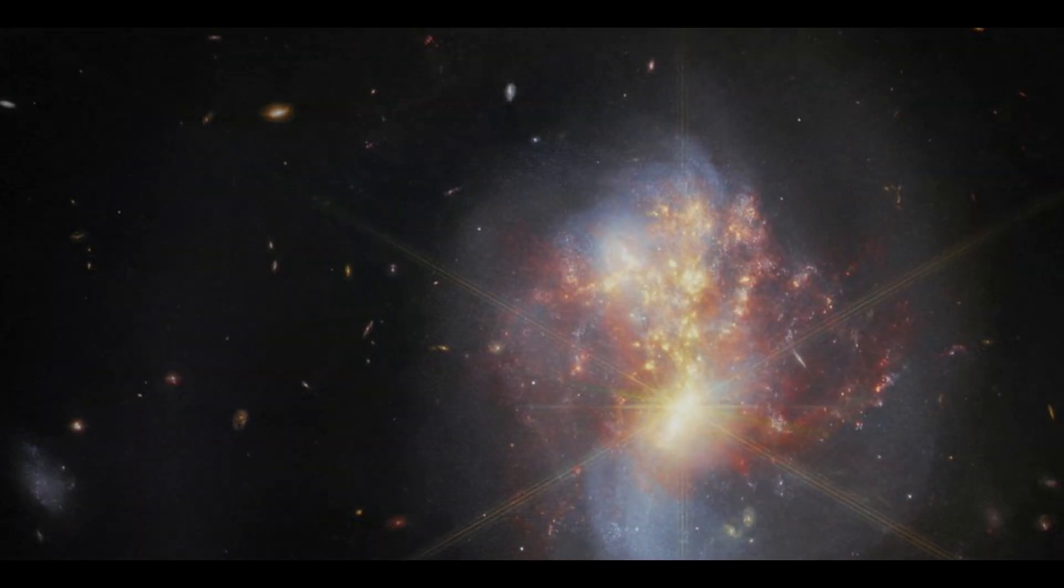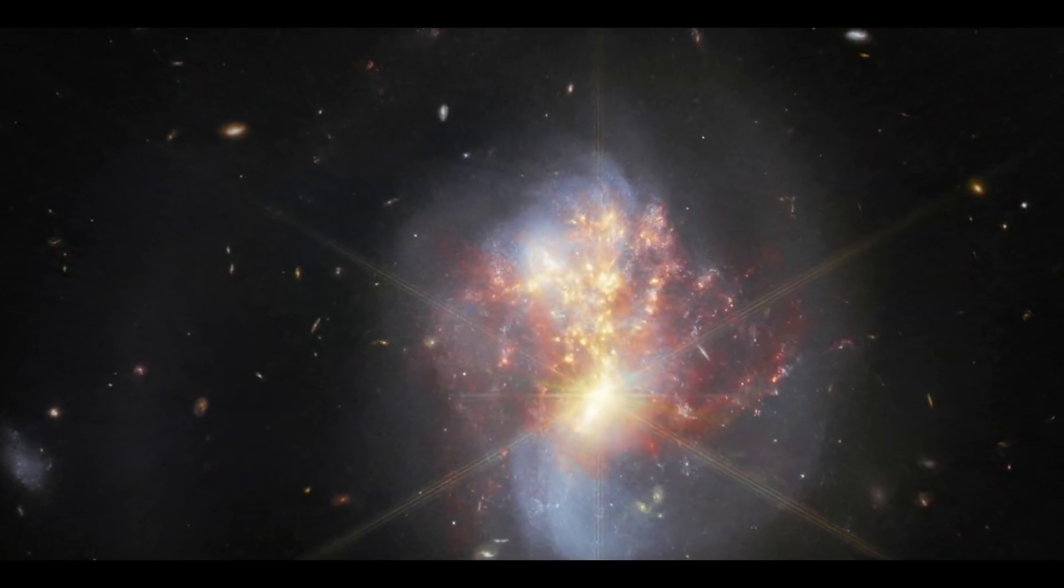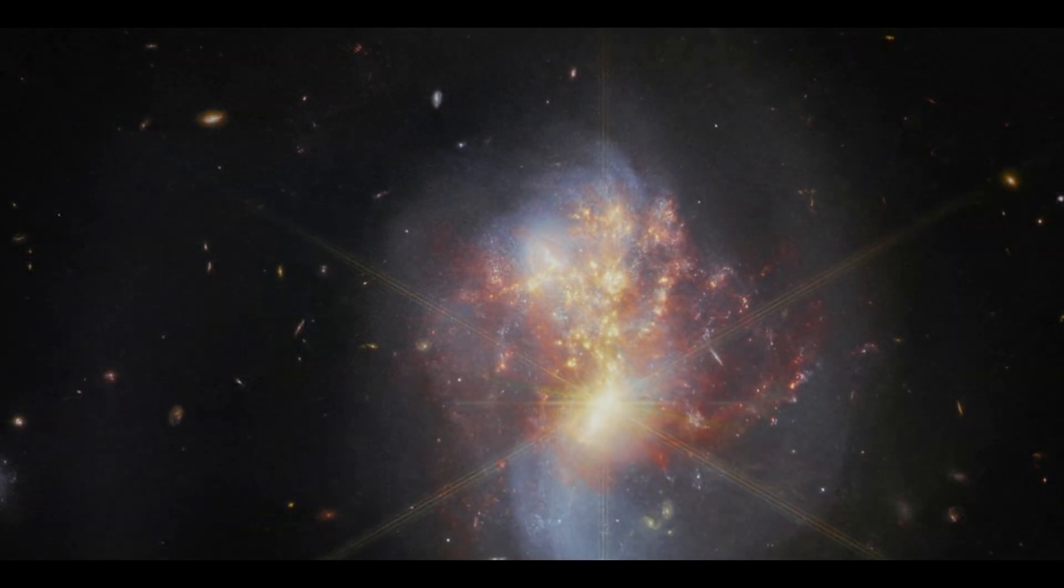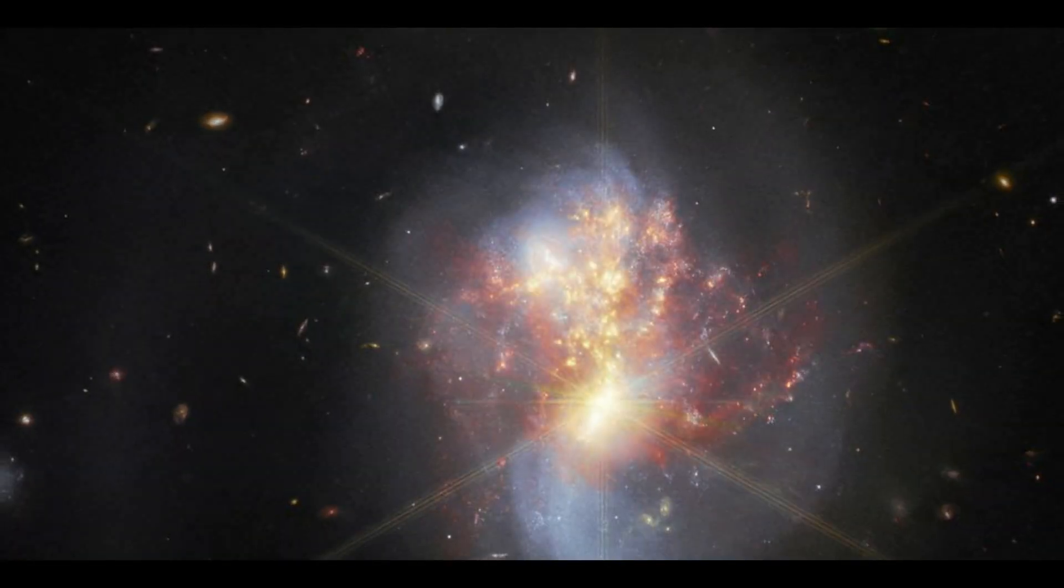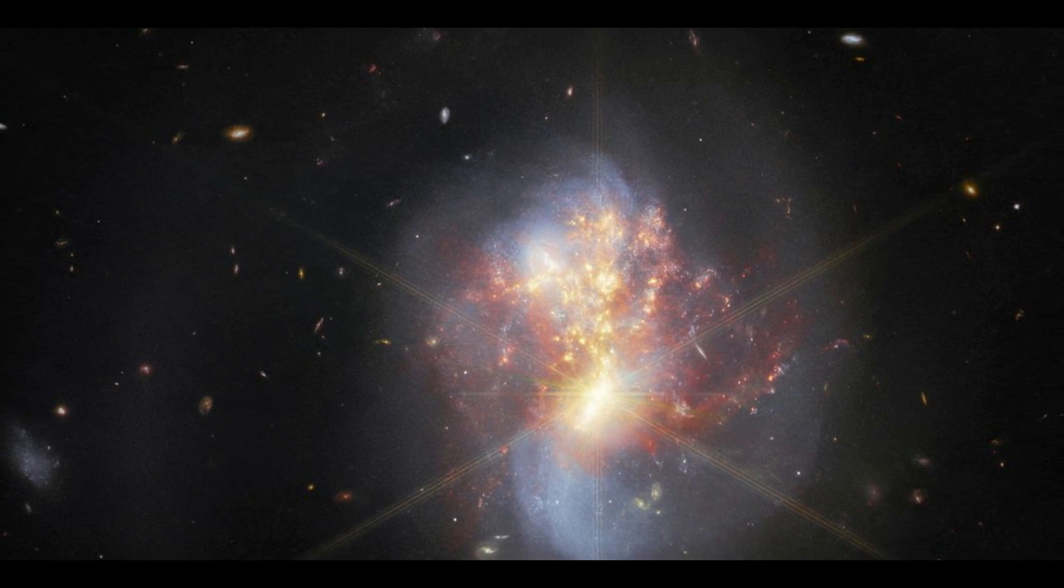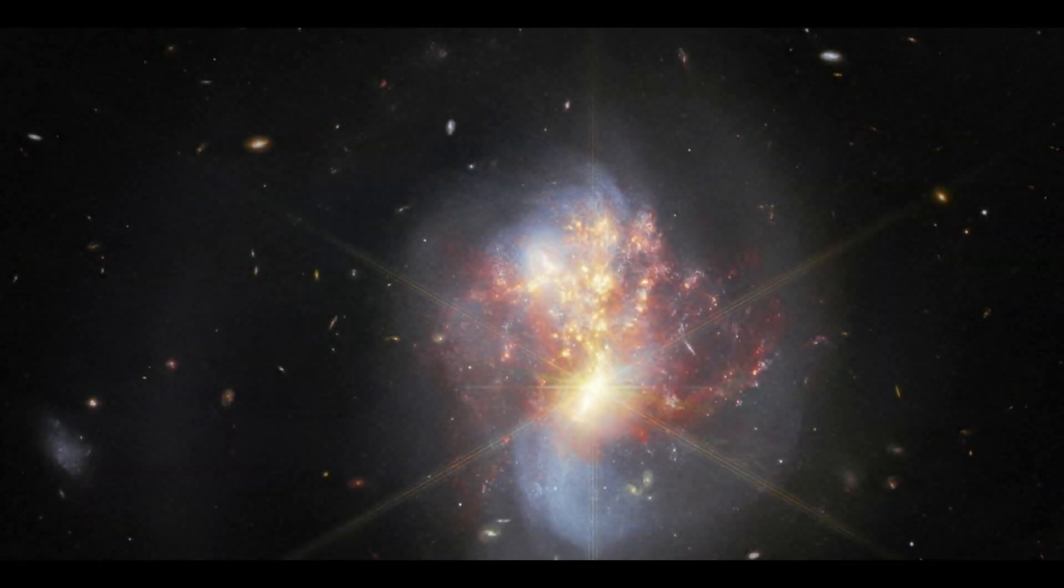When compared to Hubble's earlier image of IC 1623, Webb's view reveals an entirely new layer in the structure of the merging galaxies, which is portrayed as the central lump of bright red and orange material in the image.